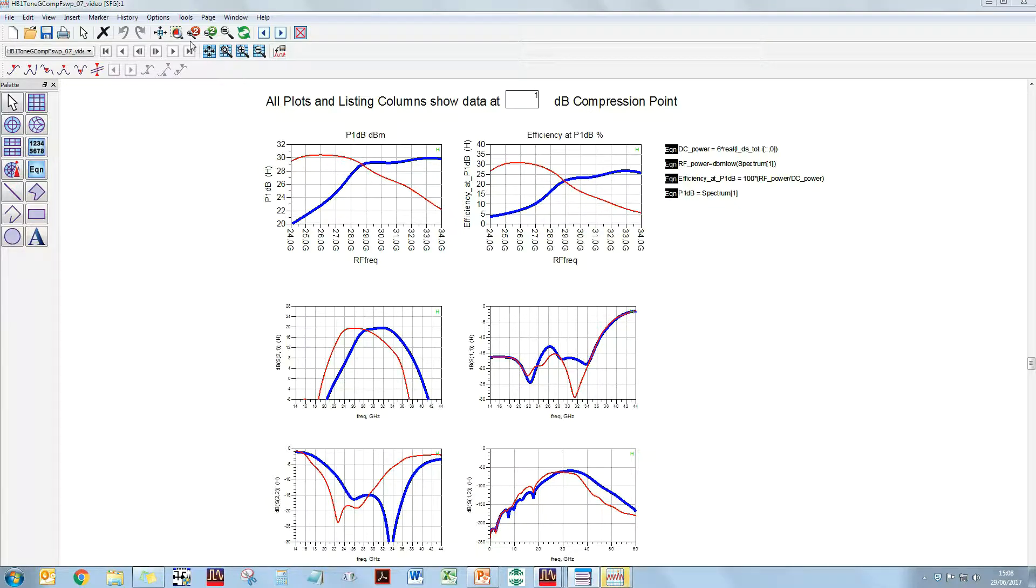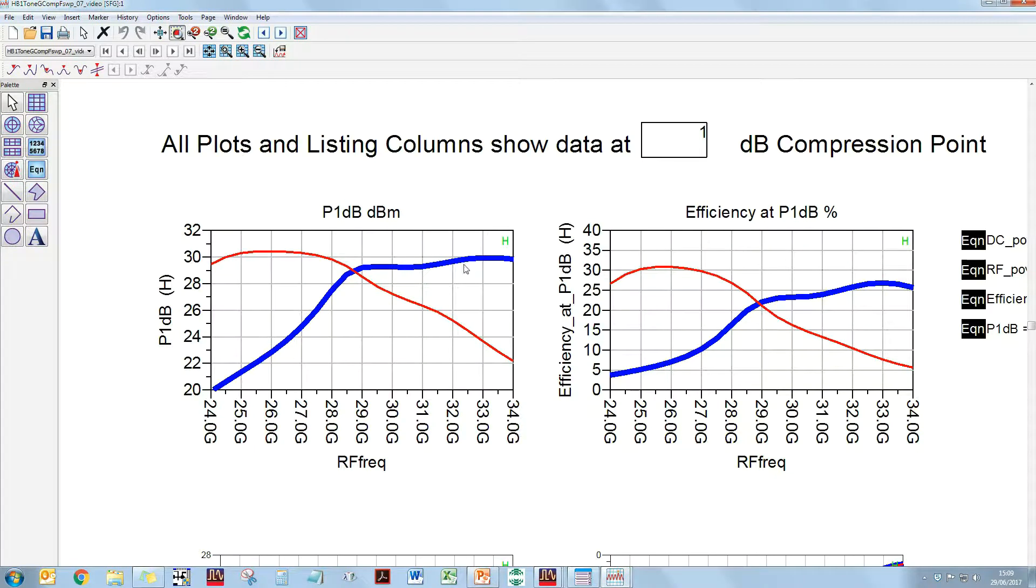Okay. So, let's look at the high band simulation data. So, this is in bold blue. And P1 dB, which we'll look at first, is round about probably 29.8 dBm average, or typical, across the band. And the power added efficiency is typically round about 26% across the band.